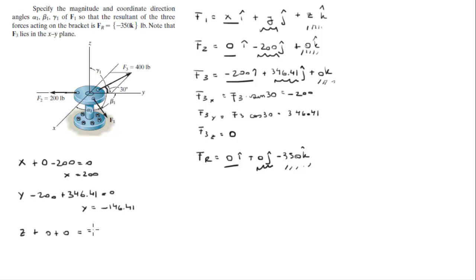And Z plus 0 plus 0 equals negative 350, so Z is negative 350. Therefore F1 equals 200i minus 146.41j minus 350k.